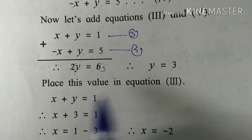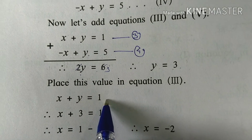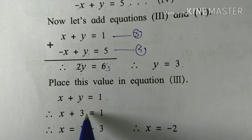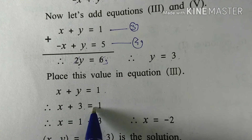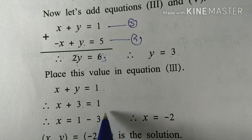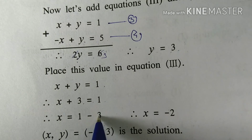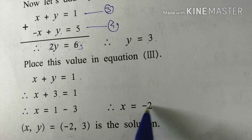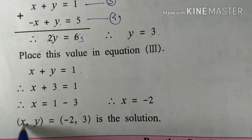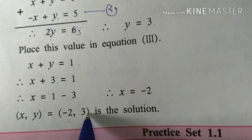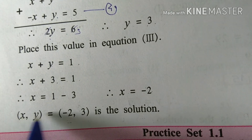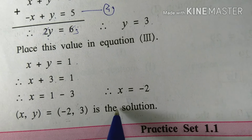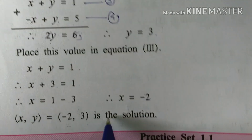From equation 3: x plus y is equal to 1, and from equation 4: minus x plus y is equal to 5. Solving these, y is equal to 1 and x is equal to 2. This is the final solution.